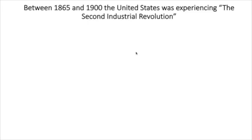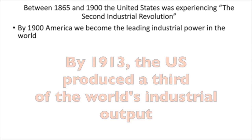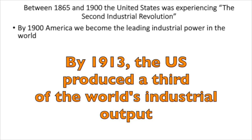Between 1865 and 1900, the United States was experiencing another industrial revolution. This became known as the second industrial revolution. By 1900, America became the leading industrial power in the world. By 1913, the United States produced one-third of the world's industrial output, more than Great Britain, France, and Germany combined.